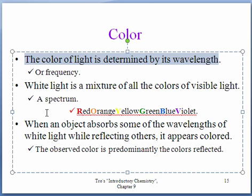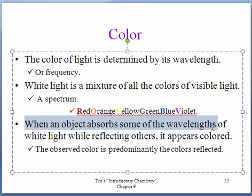When we see something that is colored, it is because that object absorbs some wavelengths while reflecting the others. The color that is reflected is the color that we see. So if something appears yellow, it is reflecting yellow while absorbing red, orange, green, blue, and violet.